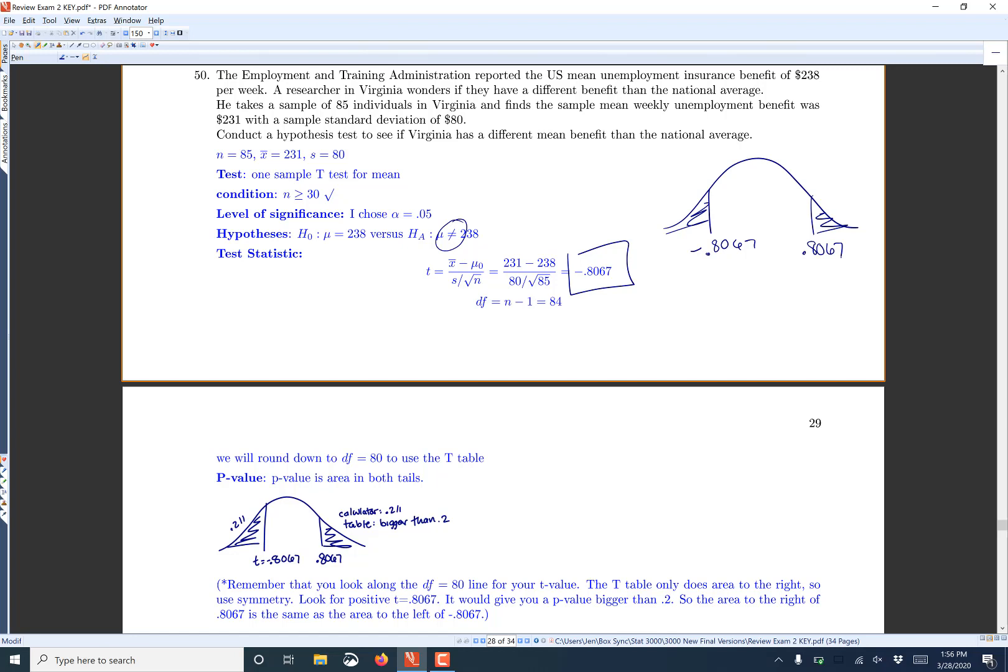Now we want to use the t-table. To use the t-table, you will also need to know degrees of freedom. Now degrees of freedom is always n minus 1. So in our case, n was 85, so we had 85 minus 1 equals 84.